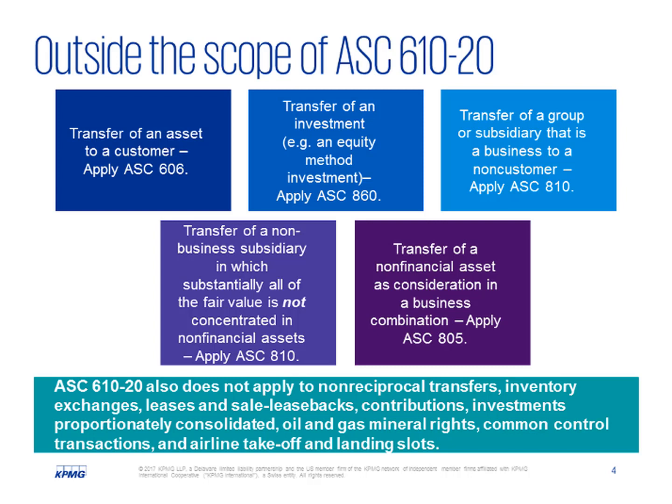As you can see, the scoping ended up being a bit complicated to simply say this is for the derecognition of non-financial assets or in-substance non-financial assets. I do not think the scope will be difficult to apply in most cases. There are a number of other items that are not in scope which we discuss in more detail in Defining Issue 17-6, available on our KPMG Financial Reporting View website.